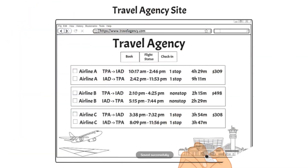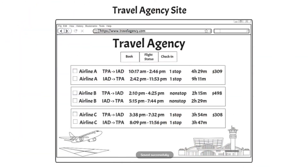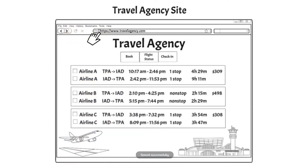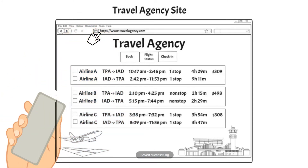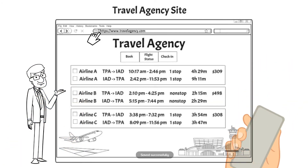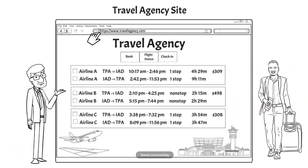But a travel agency site overlays on top of the airlines' websites. You can navigate to a travel agency website in the browser and view all the different airline itineraries and book a flight with any airline without having to go to each airline's website.